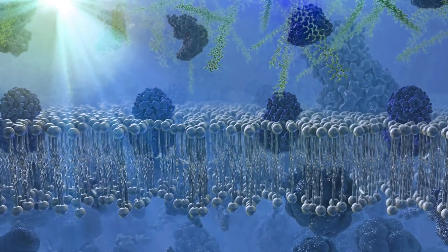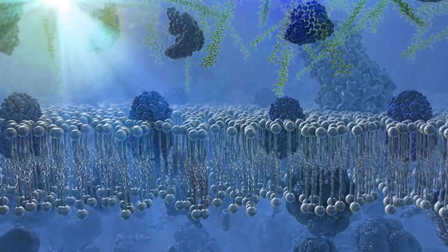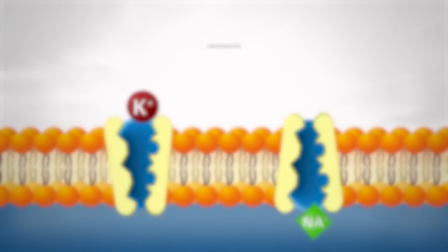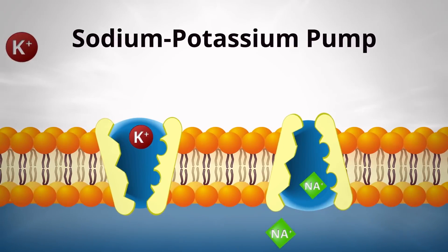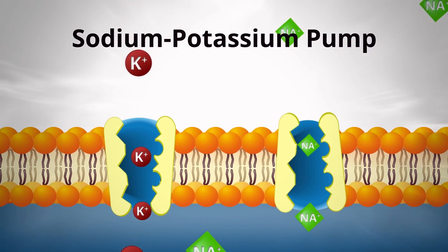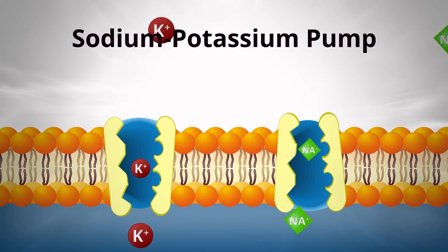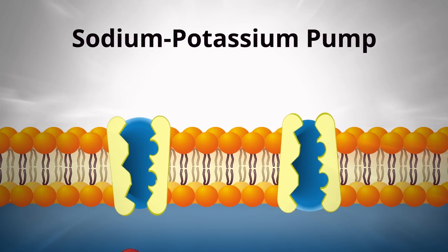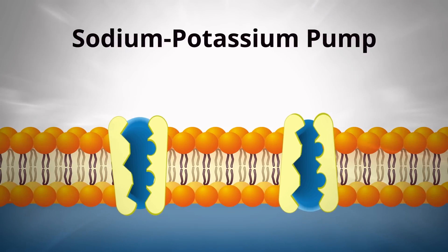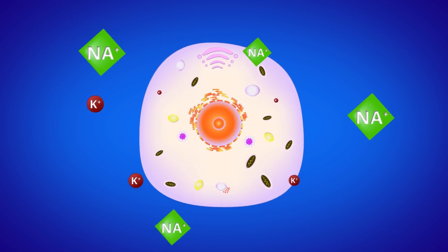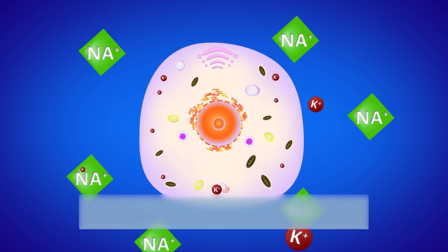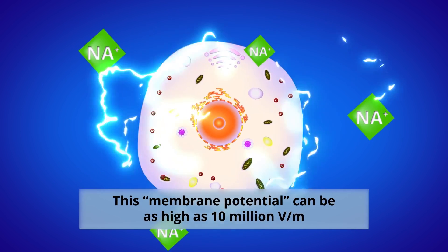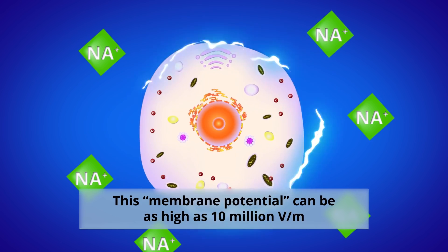The cell membrane is also like the battery of the cell. Using a process called the sodium-potassium pump, an enzyme in the cell membrane transports sodium out of the cell while bringing potassium into the cell. This active transfer of electromagnetically charged ions creates a resting voltage across the cell membrane.